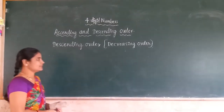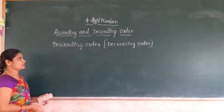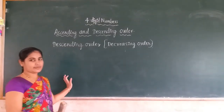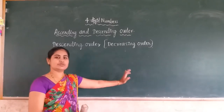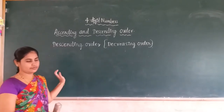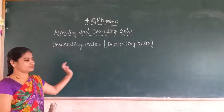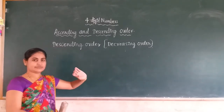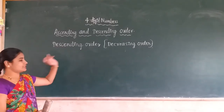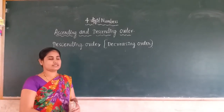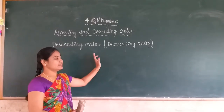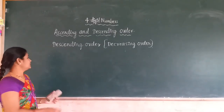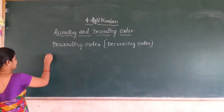In decreasing order or descending order, you write the biggest number to the smallest number. That type of arrangement we call it as descending order or decreasing order of the numbers.